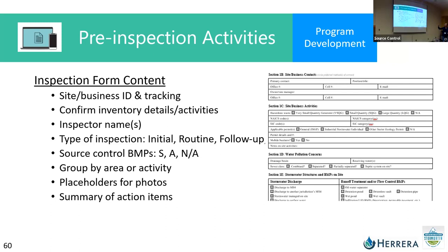Your inspection form content should include site business ID and tracking. A good tracking number should be unique and not change over time — think about that because businesses change and properties get split. Options discussed include the UBI number and the parcel number; address can change so just think carefully about that. Leave room for inspector names and confirm your inventory details — what are they doing at the site? You can look at Google Maps to get an idea of the extent of their site and property.